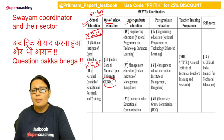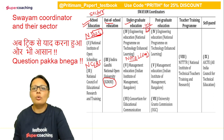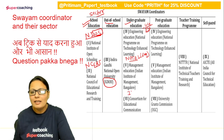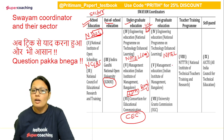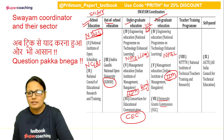UG program की बात करूँ, तो सबसे पहले आता है NPTEL, जो engineering education से deal करता है। NPTEL आपकी UG graduation के साथ-साथ undergraduate plus post graduation दोनों के साथ deal करता है। इसकी full form है National Program on Technology Enhanced Learning। फिर आता है IIM Bangalore — Indian Institute of Management Bangalore — और CEC यानी Consortium for Educational Communication। ये तीन undergraduate के साथ deal करते हैं। PG के लिए again NPTEL (UG+PG दोनों), IIM Bangalore, और University Grants Commission — UGC — PG education के साथ deal करती है।